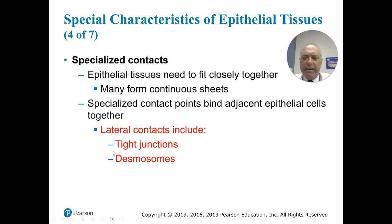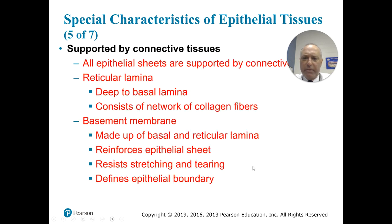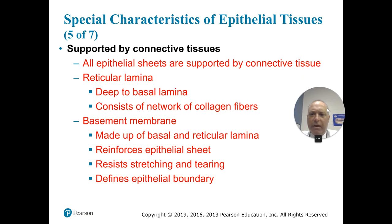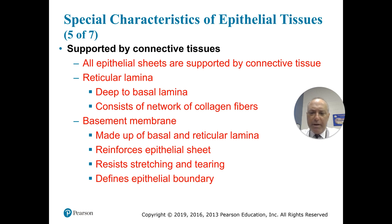There are specialized contacts including tight junctions or desmosomes. All epithelia is supported by connective tissues. There is the reticular lamina, which is deep to the basal lamina — it's a network of collagen fibers. The basement membrane, made up of basal cells, reinforces the epithelial sheet, resists stretching and tearing, and defines the boundary. It also contains stem cells that divide to regenerate the epithelium when it is damaged.